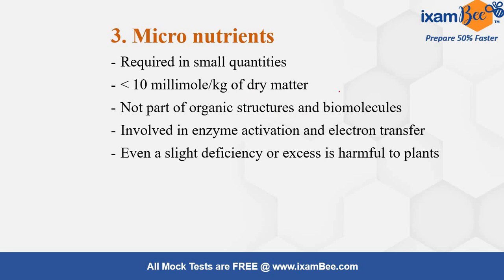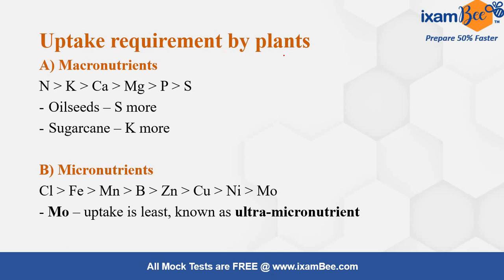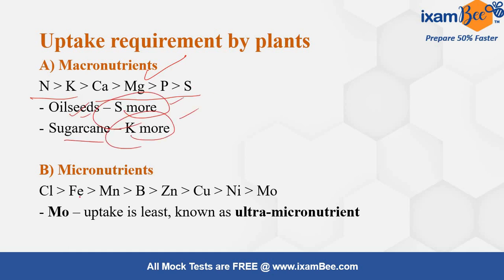Micronutrients are not part of organic structures or biomolecules. In oilseeds, Sulfur is required in more amount, and in sugarcane, Potassium is required in more amount. The order of micronutrient uptake by plants is: Chloride > Iron > Manganese > Boron > Zinc > Copper > Nickel > Molybdenum. Molybdenum has the least uptake and is therefore also known as the ultra micronutrient.